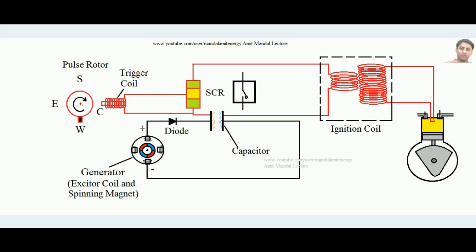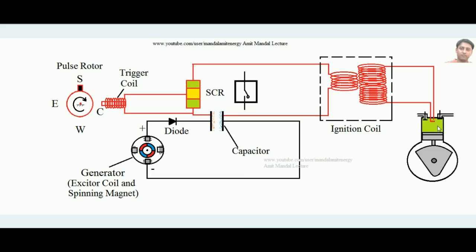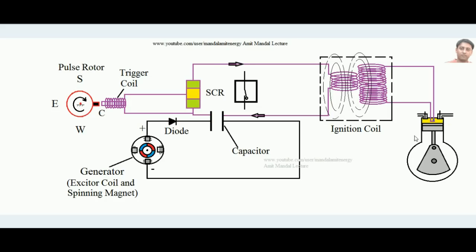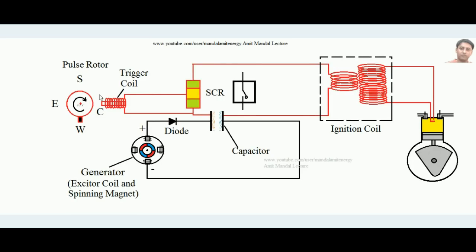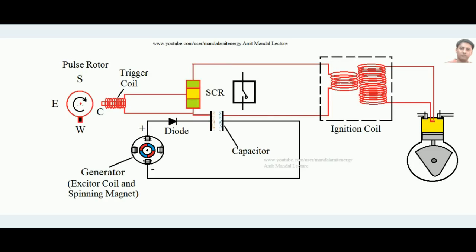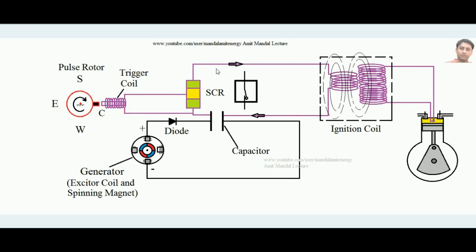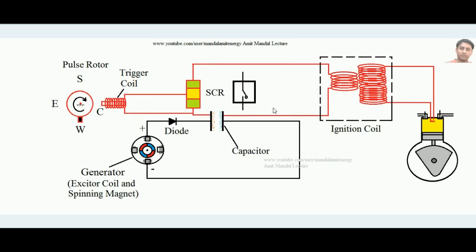After the working stroke comes the exhaust stroke — the SCR circuit is still open because the magnet is not aligned, and the capacitor is still charging. Then comes the suction stroke; the SCR is still in open circuit. At the end of the compression stroke, the magnet correctly aligns with the trigger coil, the SCR closes, and whatever charge has built up in the capacitor is discharged through the ignition coil. High voltage is created, a spark is developed, and the fuel ignites. In this cyclic fashion, the CDI circuit continuously works to develop the spark inside the engine cylinders.